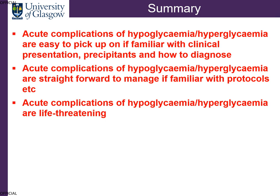To summarise: acute complications of hypoglycemia and hyperglycemia are easy to pick up on if you're familiar with the clinical presentation, precipitants and how to diagnose. They are straightforward to manage if you're familiar with the protocols. And finally, acute complications of hypoglycemia and hyperglycemia are life-threatening if left untreated.